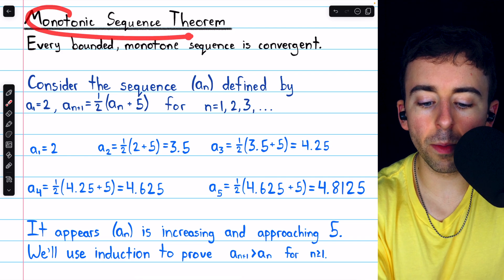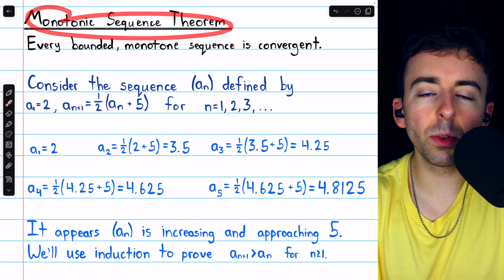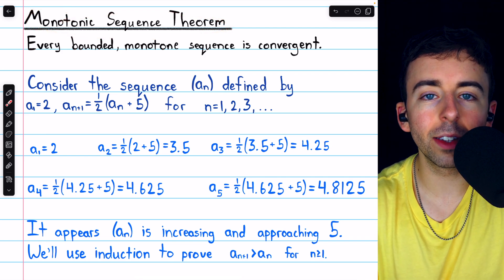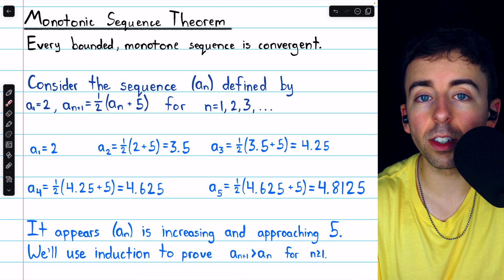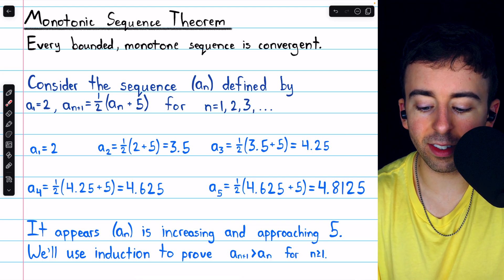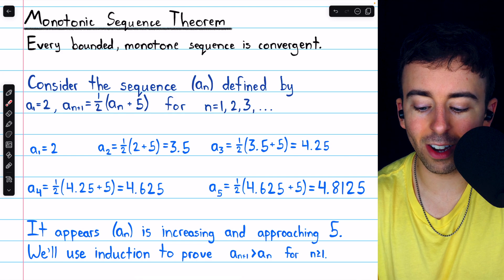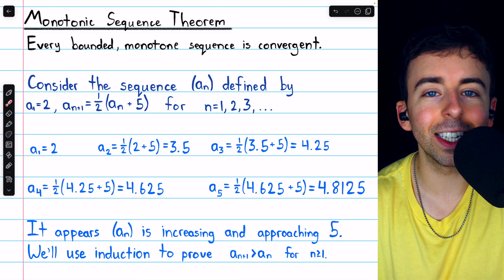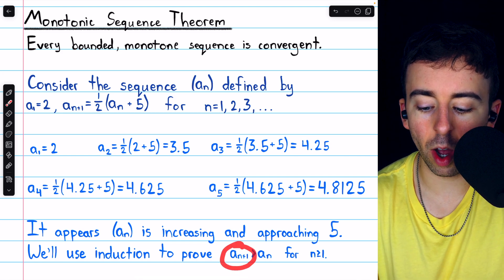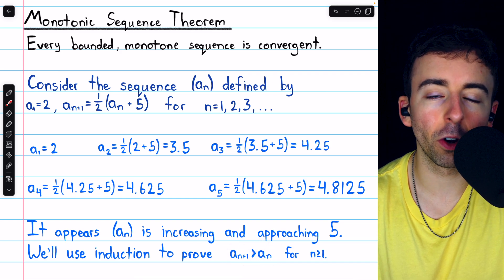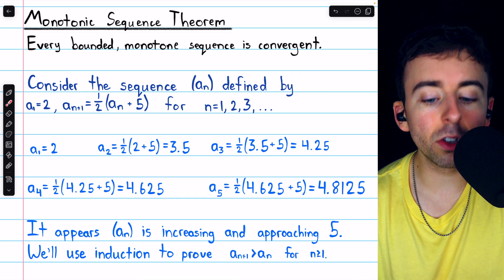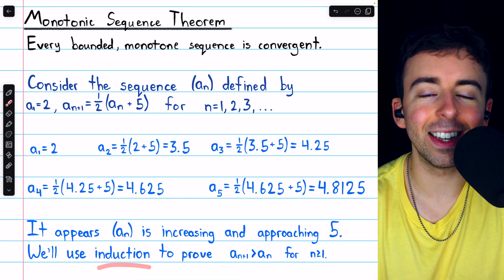So we may think to use the monotonic sequence theorem, but to apply this theorem, we must prove that our sequence is both monotone and bounded. Let's start by proving that the sequence is monotone. We're going to prove specifically that it's increasing — that each a_{n+1} is greater than a_n, that each term is greater than the preceding term — and we'll do this using mathematical induction.